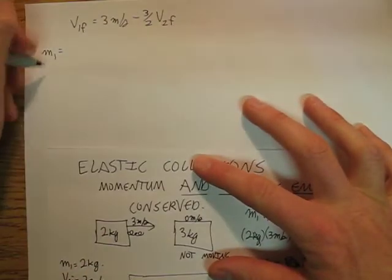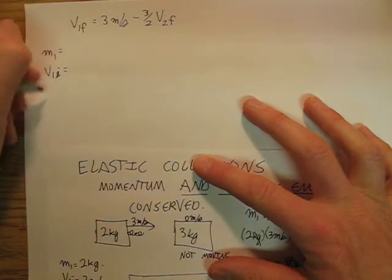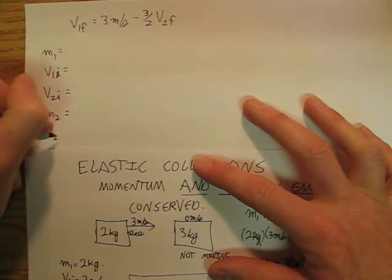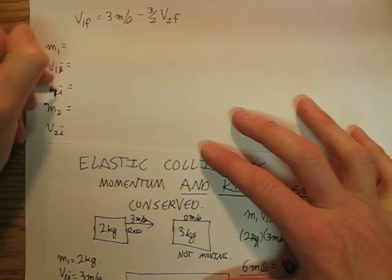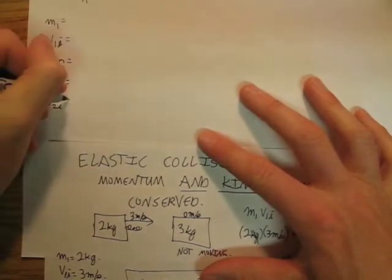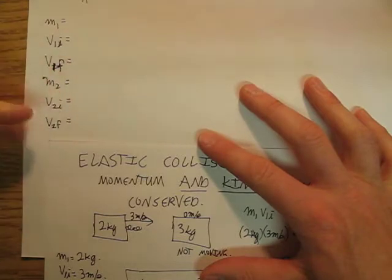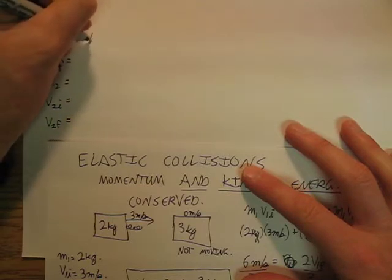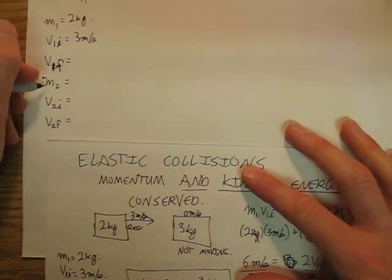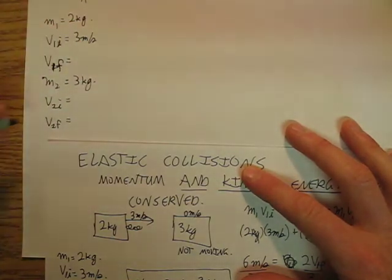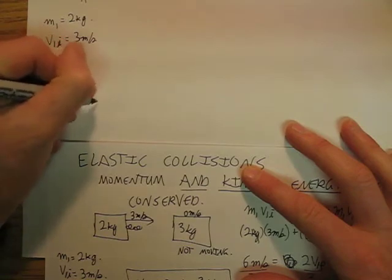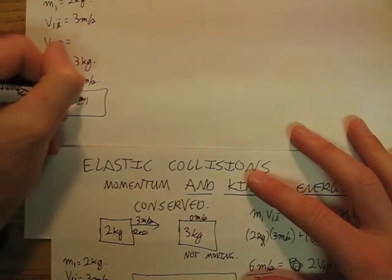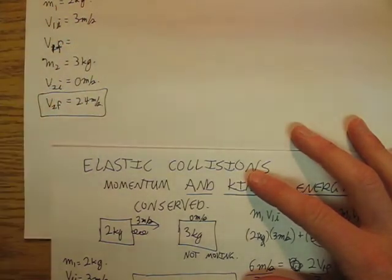m_1, v_1i, I'm sorry, this is v_1f, v_2f. Okay, and we had 2 kilograms, 3 meters per second, don't know that yet. This is 3 kilograms, this is 0 meters per second, and then finally one of the things that we found from the previous was 2.4 meters per second.